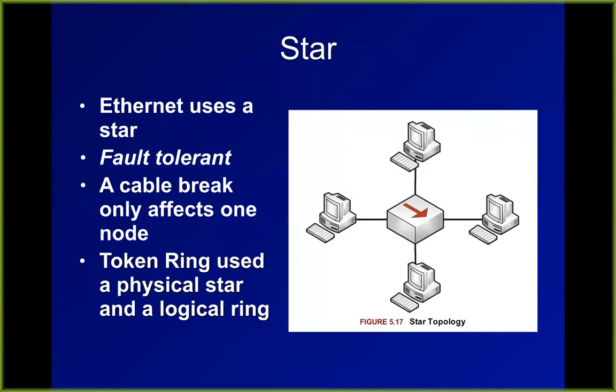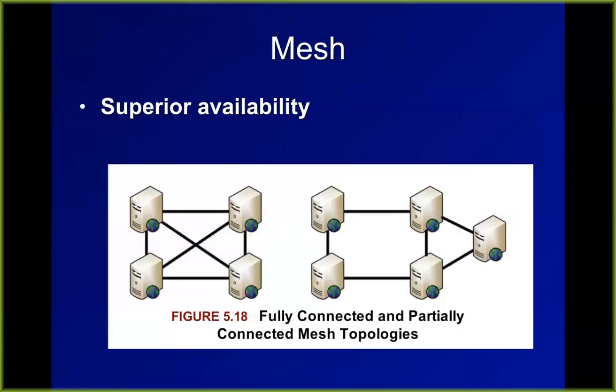Token Ring actually used a physical star but a logical ring — even though cables were connected in a star, the token moved from computer to computer as if in a ring. A mesh is essentially what you have on the internet. A full mesh has every device connected directly to every other device, which is the most fault-tolerant but most expensive. A partial mesh, which is what real internet infrastructure uses, has devices with more than one path but not a direct path from every device to every other. Both kinds of mesh provide the most availability because many nodes and cables can fail and the rest can still communicate.